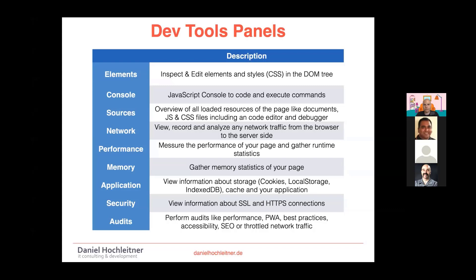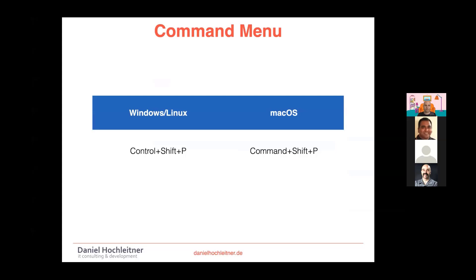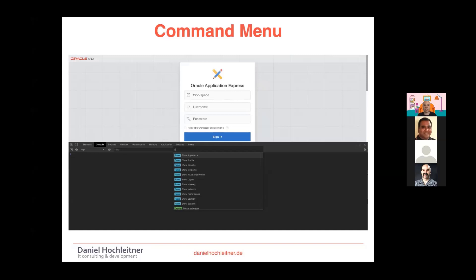The first useful thing is the command menu. If you're familiar with Visual Studio Code, it's pretty much the same — shortcut Ctrl+Shift+P — and you get a command menu where you can type and execute commands, open panels, and so on. If you don't like using your mouse, this is a nice way to jump between the different sections of the browser development tools.